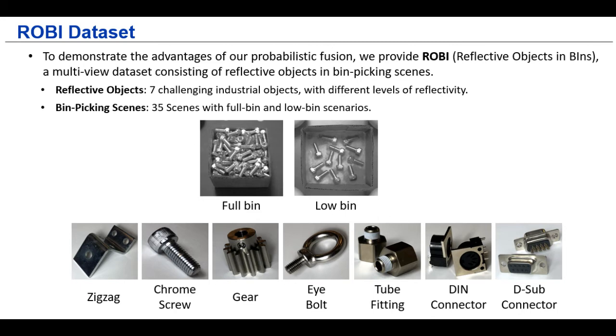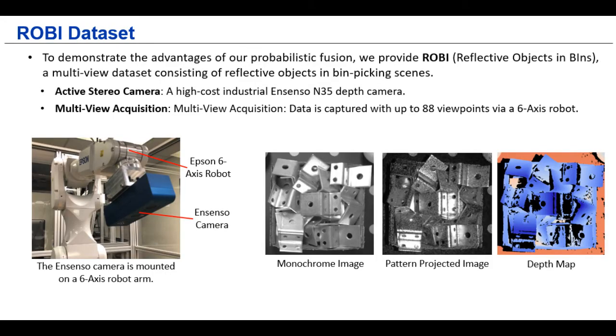And to demonstrate the advantage of our work, we present ROBI, the Reflective Objects in Bin's dataset. This dataset is a multi-view dataset for the highly reflective objects. It includes seven industrial objects in different bin scenarios. We capture the ROBI dataset with a high cost Ensenso active stereo camera. And we can see that the camera is able to capture the object with a lot of geometric details. But there is a large amount of missing depth data because of the surface reflection. And for the data capture, we mount this camera to a six-axis robot arm and program it to move to different viewpoints for the data capturing.